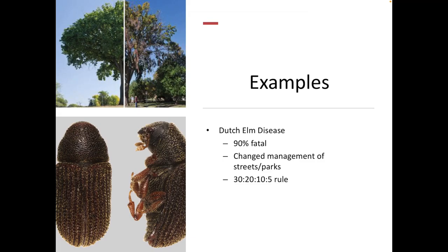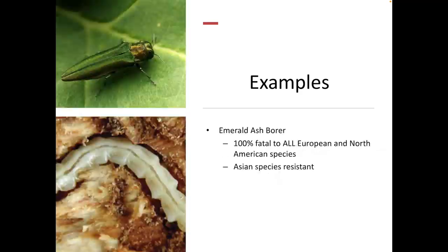Dutch elm disease changed how we plant public street areas. The ideal is the 30-20-10-5 rule: no more than 5% of any one species, no more than 10% of any one genus, no more than 20% of any family, and no more than 30% of any order. But things haven't improved — due to worldwide shipping we now have emerald ash borer, which is 100% fatal to all European and North American ash species with no natural resistance found yet, though all Asian species are resistant. The question is whether we can genetically engineer our American species using Asian genetics, or rely on traditional breeding.